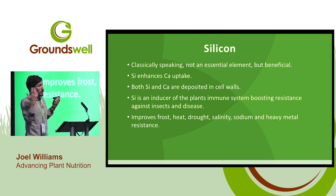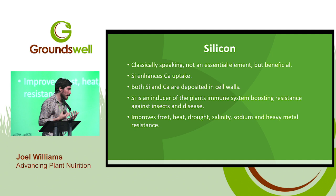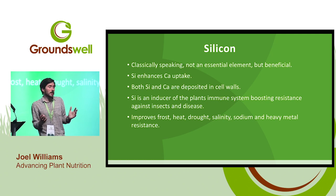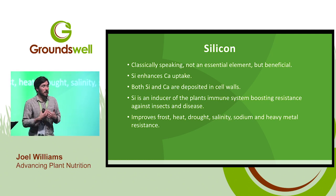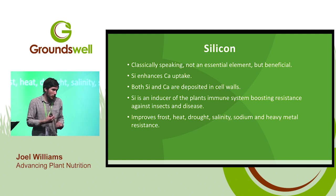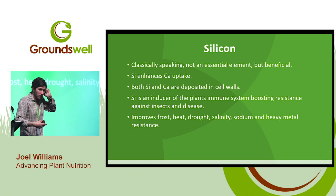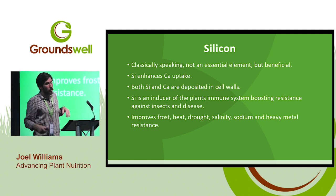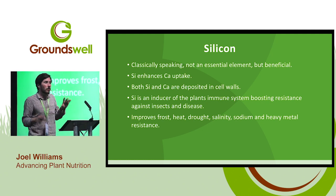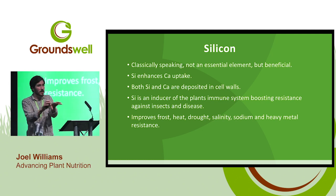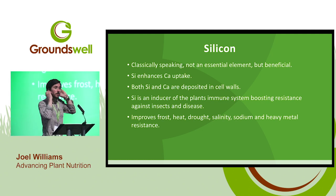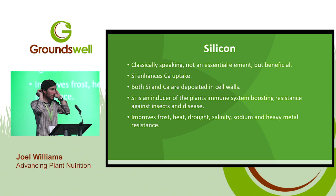Silicon: it's not an essential mineral but it is very beneficial. It also deposits in the cell walls like calcium and boron, helping to structurally protect the plant against disease. It also has another effect — inducing resistance, enhancing and supporting immune responses within the plant and helping the plant fight off insects and disease. There's a lot of very interesting research being done on silicon. Whatever crop you grow, go into Google and type in 'silicon nutrition' and your crop — there's so much really interesting information out there on that mineral.